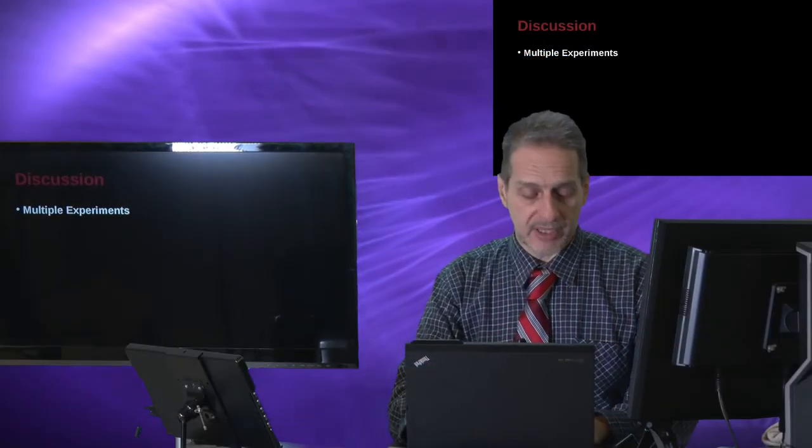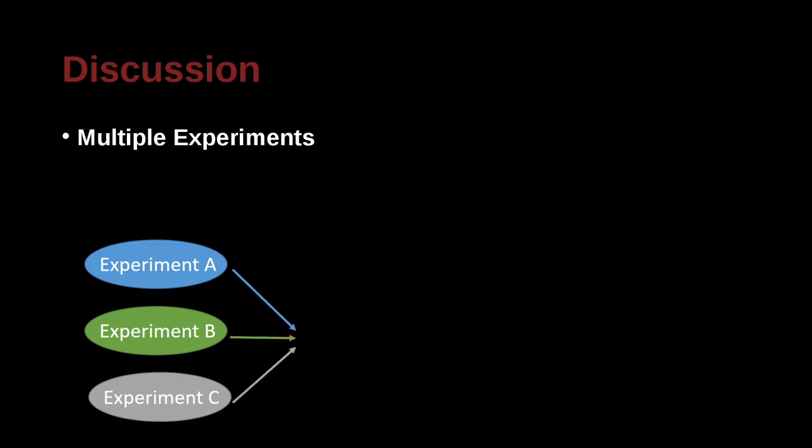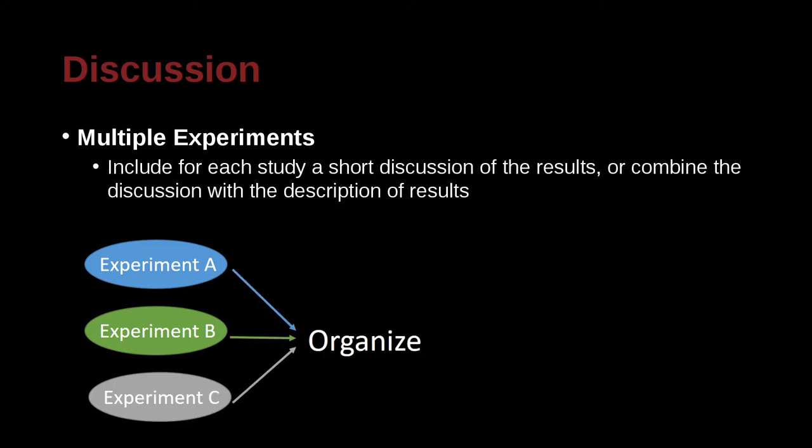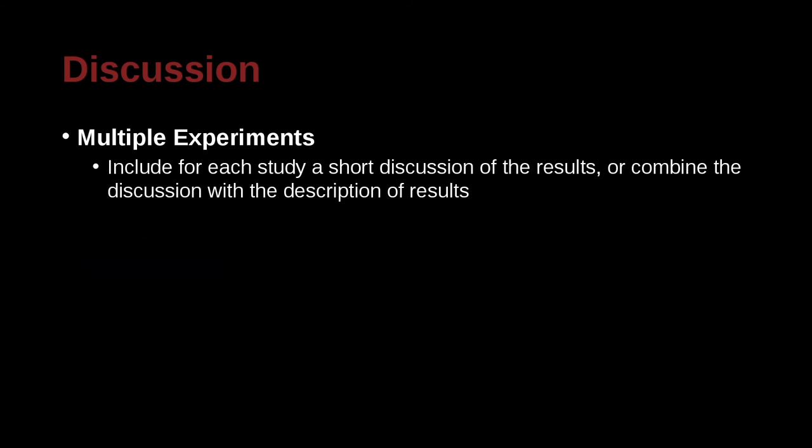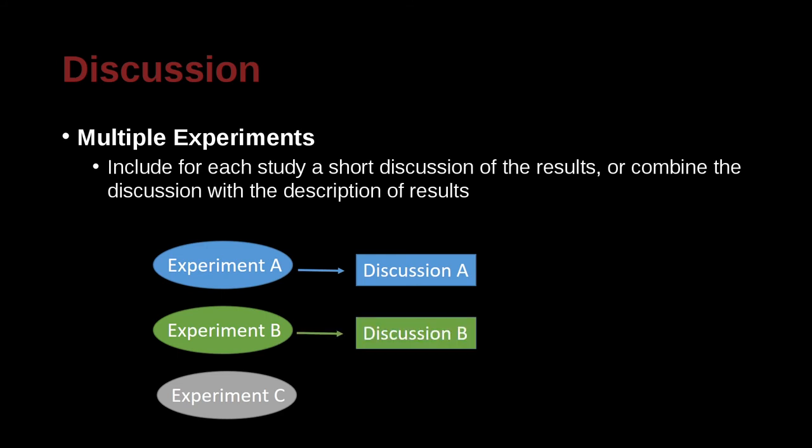If you're doing multiple experiments, let's say you have experiment A, and then experiment B, and then experiment C. How can you organize these in your discussion? For each of these, you can have their own discussion. So you can have a little discussion for each of these, experiment A, and then a discussion for B, and then a discussion for C.